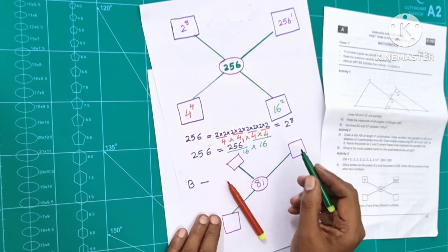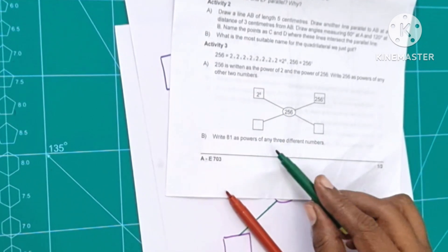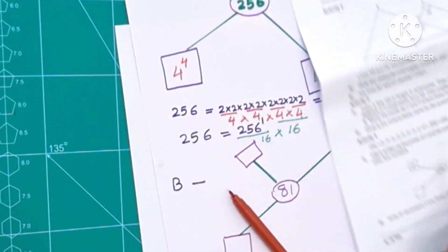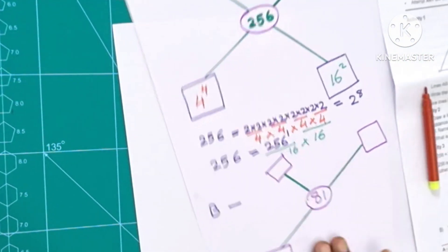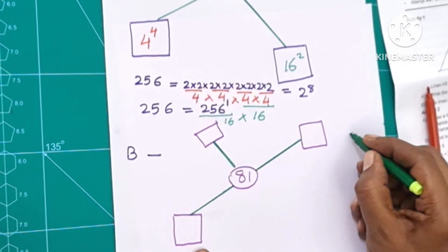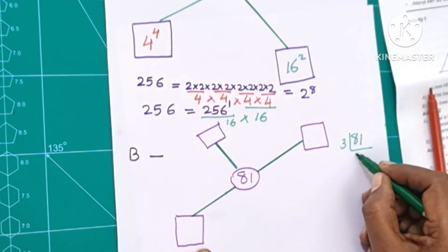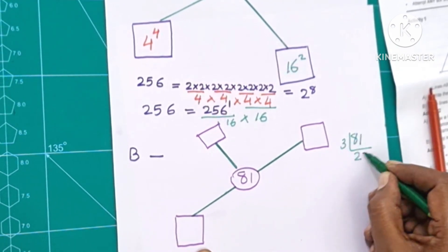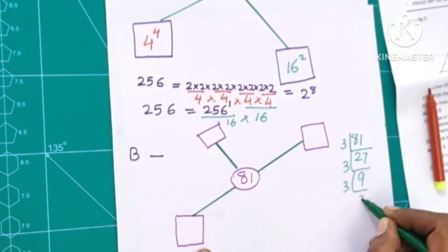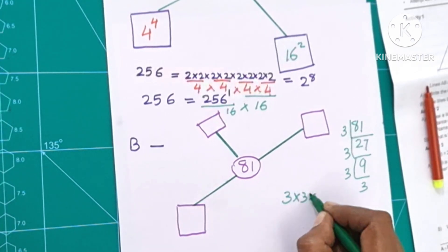Let's take a look here. In this case, write 81 as the powers of any 3 different numbers. This way, we can write 3 different things in the same way. We can do a factorization. Here are 3 different things — they should write 3 different things.